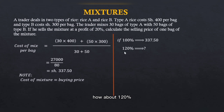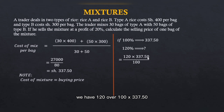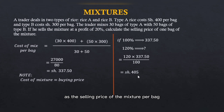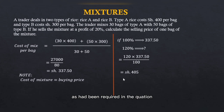So if the cost price at 100% is 337 shillings and 50 cents, how about 120%? We have 120 over 100 times 337.50, and this gives us 405 shillings as the selling price of the mixture per bag — in order to make a profit of 20% as required.